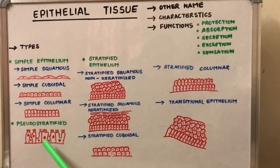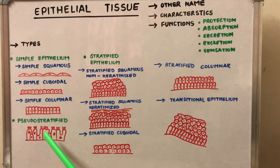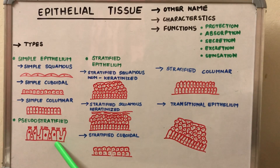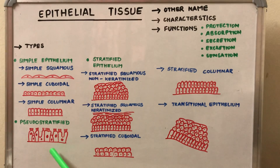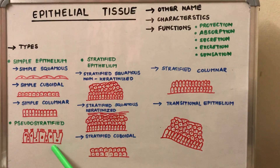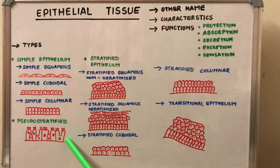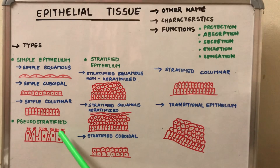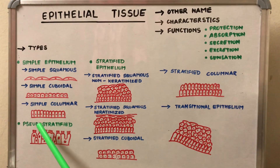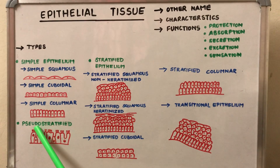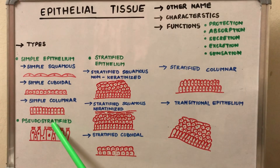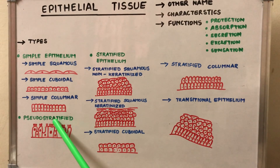The nuclei present in this type of epithelium vary in level. Each cell is different in shape, and the level of the nucleus also varies, giving a false appearance of stratification — it appears to be multi-layered but is actually single-layered. Therefore it is called pseudo-stratified. It is present in the respiratory tract and the male genital system.